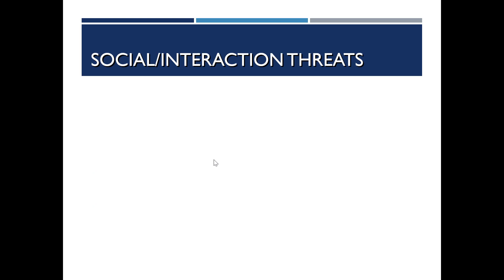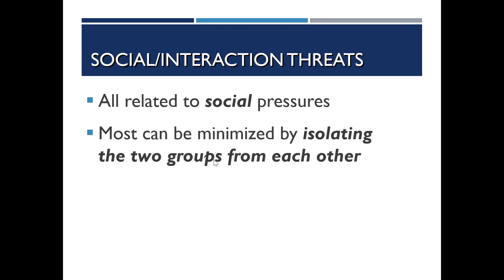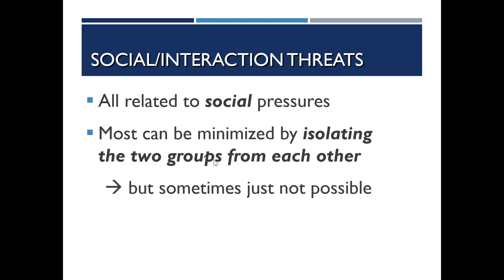Next are social or interaction threats, which have to do with social pressures when you have multiple groups of people. Many of these threats can be minimized by isolating the two groups from each other, but in some cases that's not possible — for example, how do you keep two classrooms of children from talking to each other on the playground? If separation is possible, the social interaction between groups can be stopped.